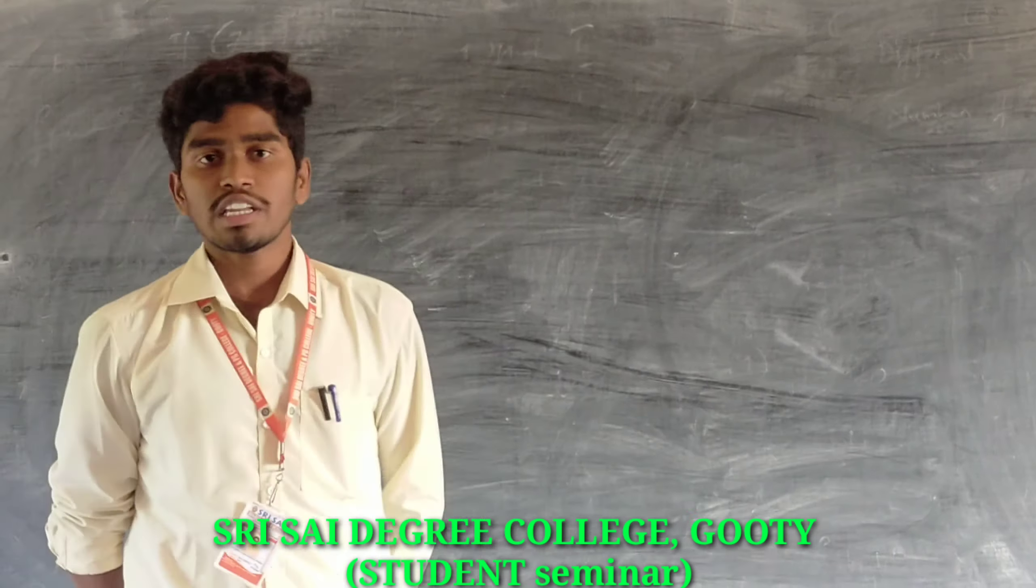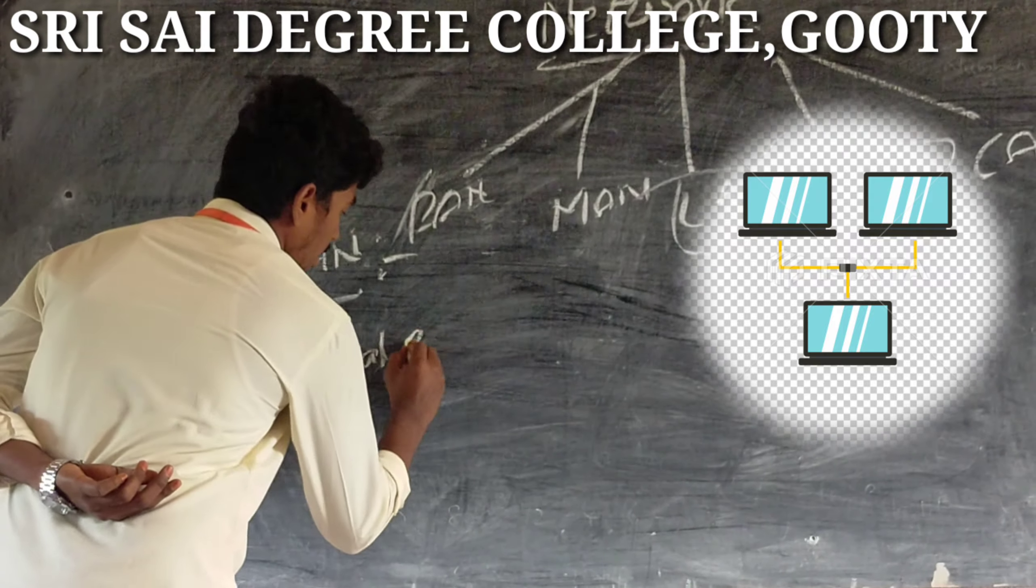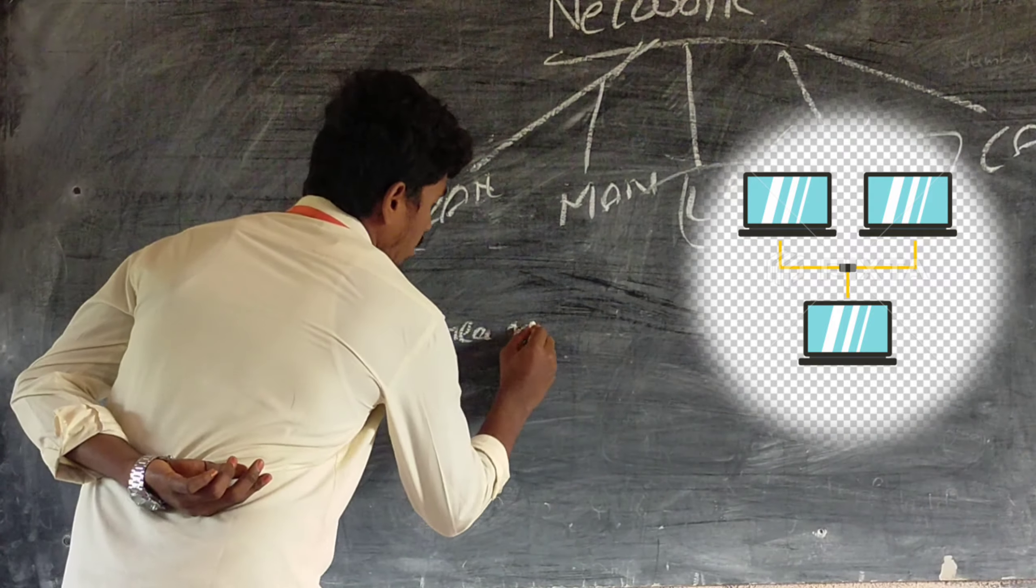For example, a principal office, we have to connect computers in this area. This area will connect to the computer in a limited area. This is local area network.